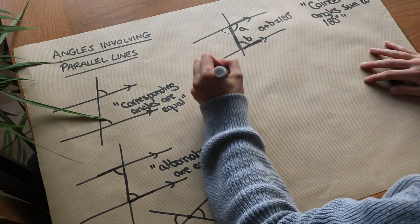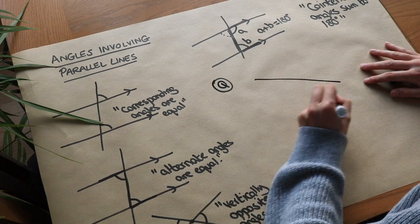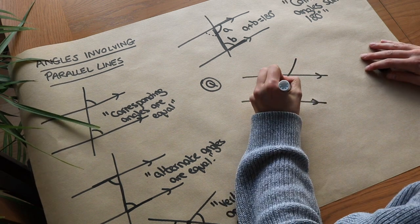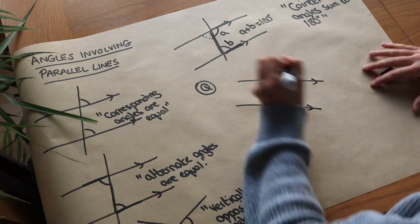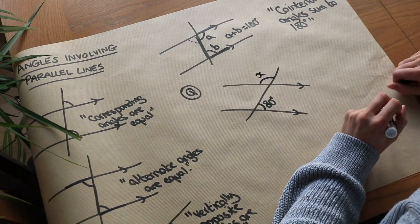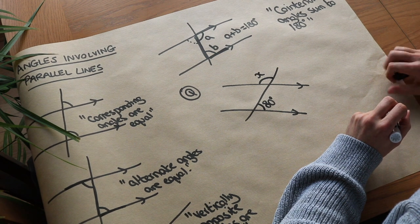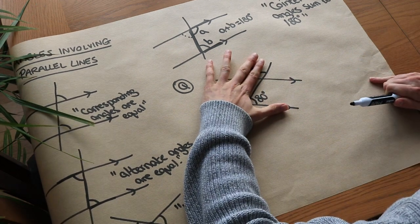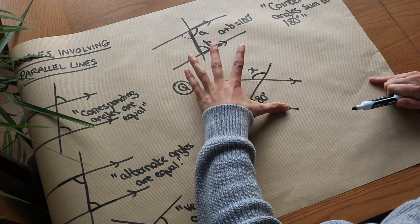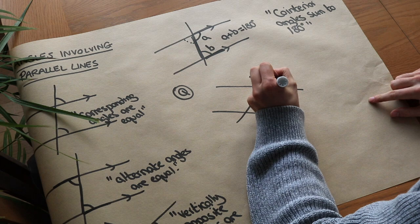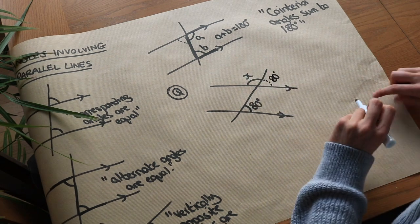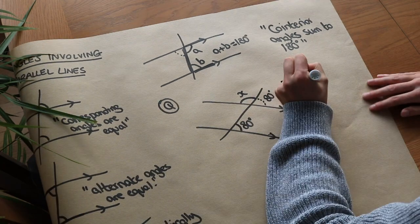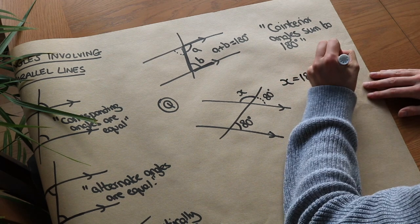Let's solve an initial problem: two parallel lines connected by a line, with an angle of 80 degrees given, and we want to find angle X. We can shift our hand from the first parallel line to the second — that angle is also 80 degrees by corresponding angles. Then since these two angles are on a straight line and add up to 180 degrees, X equals 180 minus 80, which is 100 degrees.